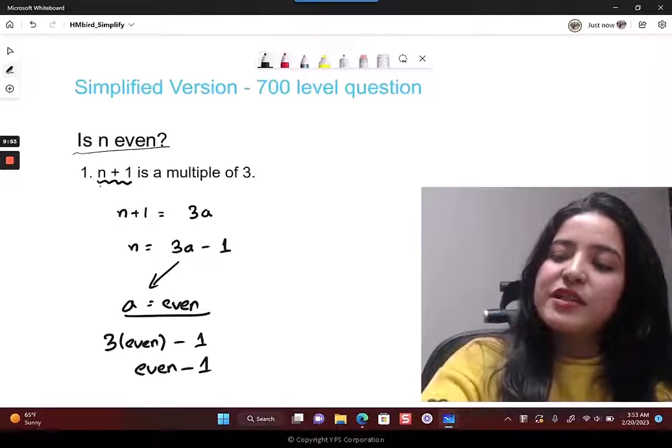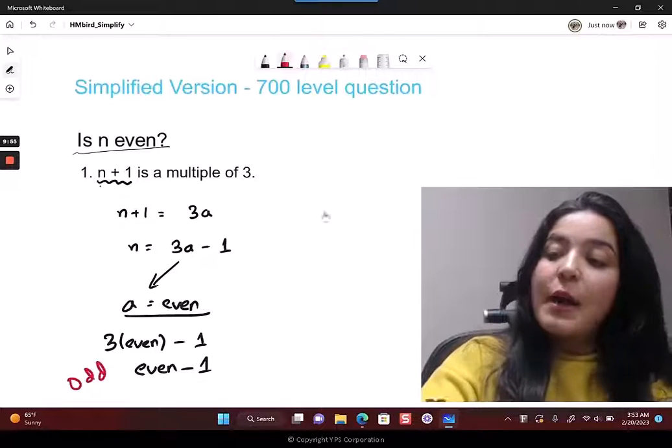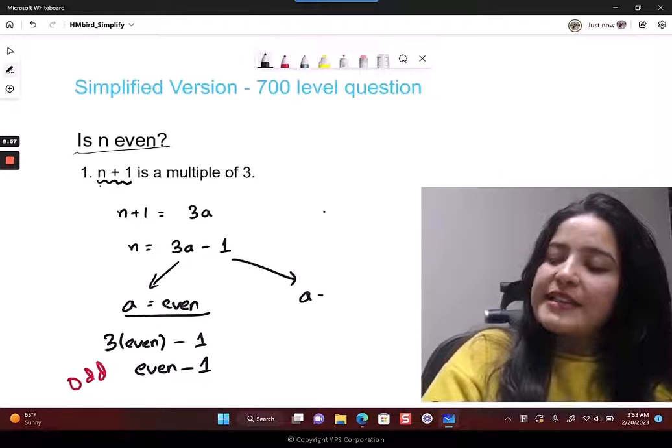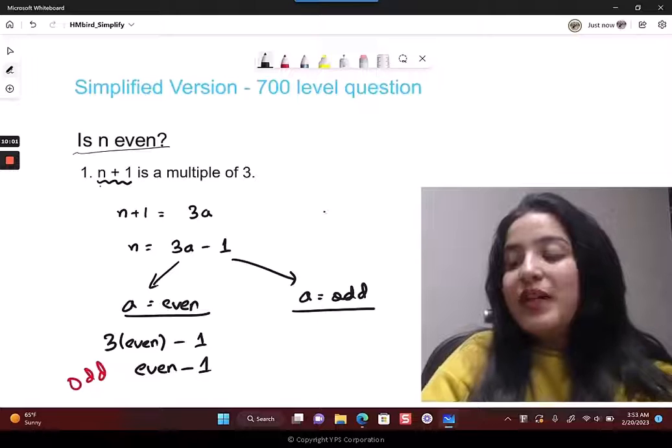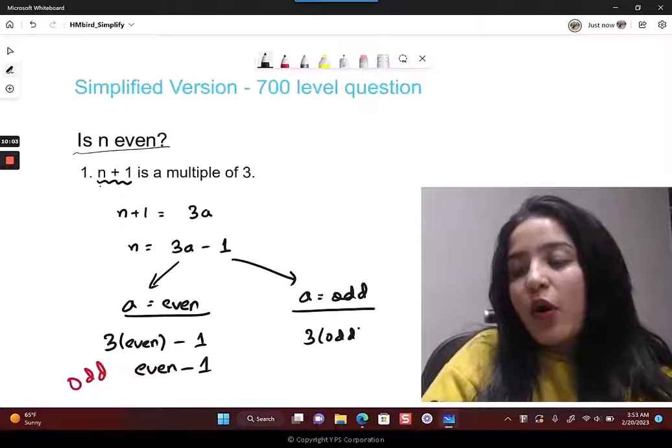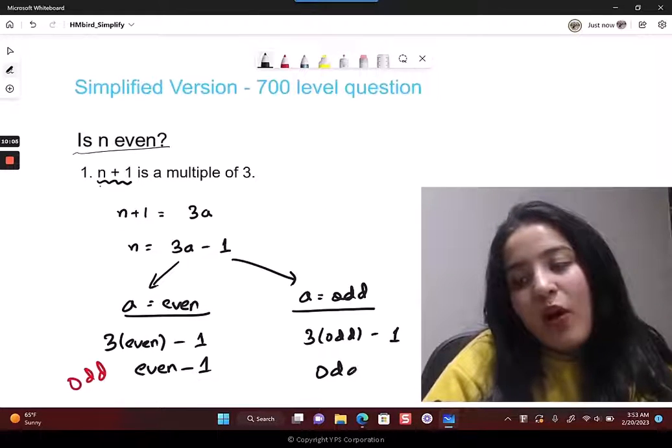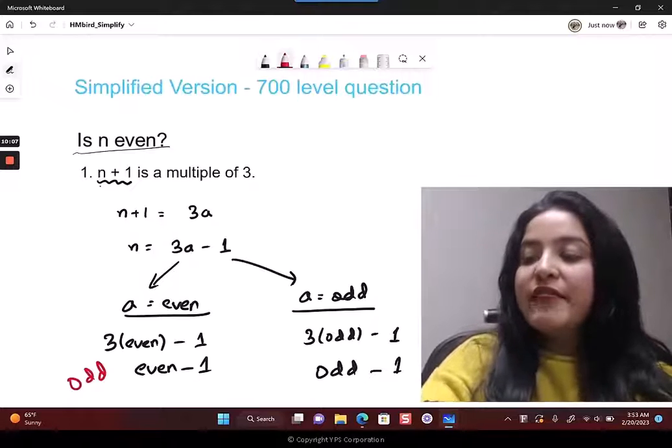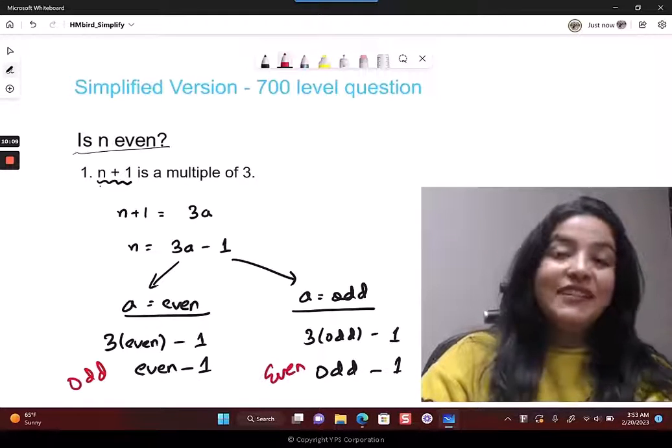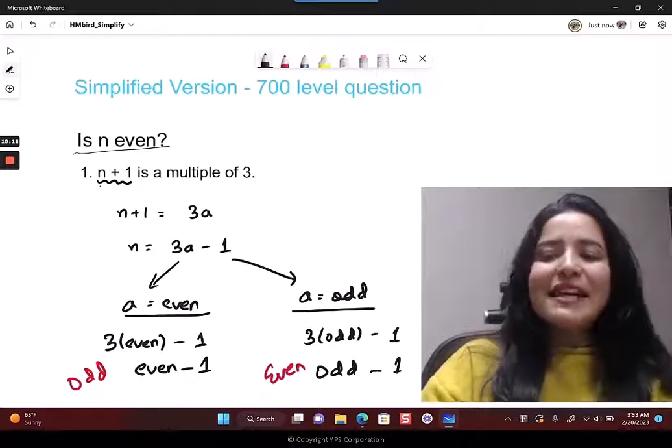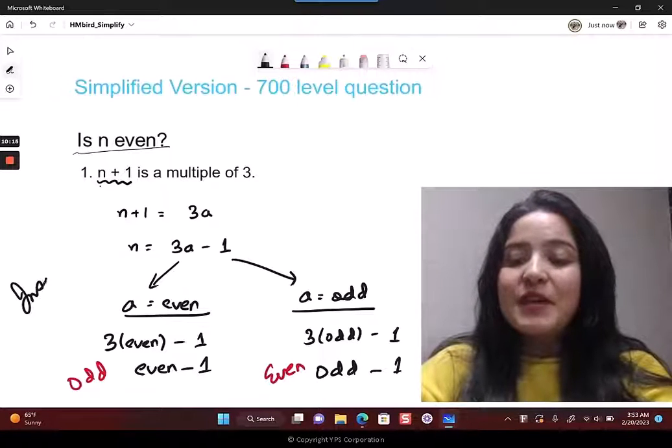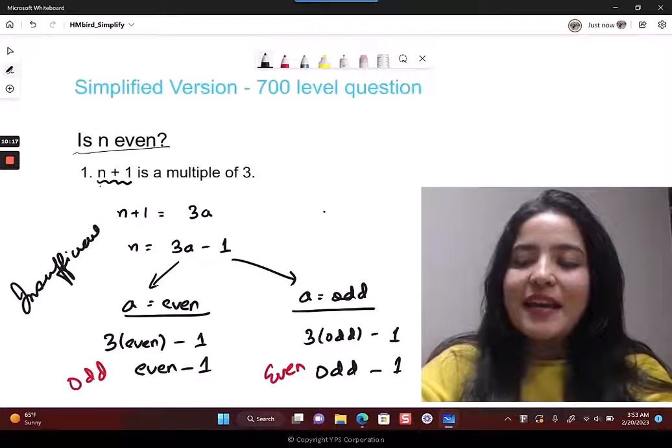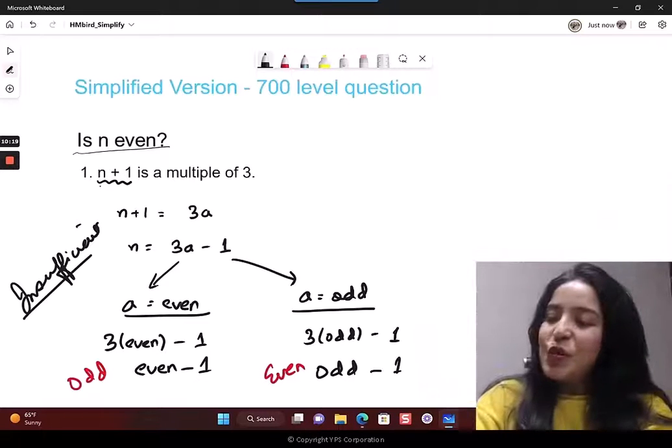Now, is n even? Can I tell that here? No. Look, if my a is even, then 3 times a is 3 times something even, so the result is even. When you subtract 1 from it, the result here is odd. But on the other side, say a is odd - then 3 times odd is odd, so odd minus 1 eventually gives you even.